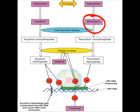Valacyclovir and famciclovir are prodrugs that are converted to their active forms — acyclovir and penciclovir respectively — through oxidation and hydrolysis. These active forms are then converted into monophosphate, diphosphate, and triphosphate. The triphosphate enters DNA or RNA synthesis, and due to the absence of the sugar moiety, inhibits DNA synthesis, terminates the chain, and inhibits viral DNA polymerase. The mechanism of action of all these drugs is the same.